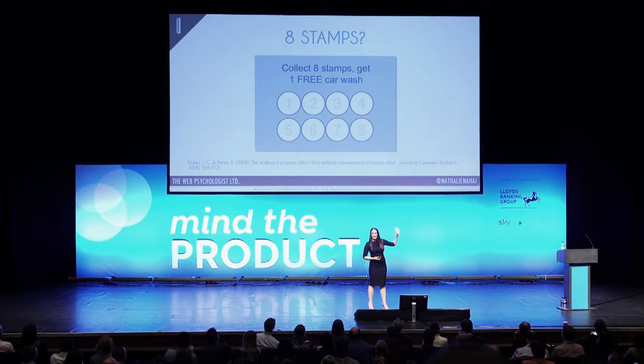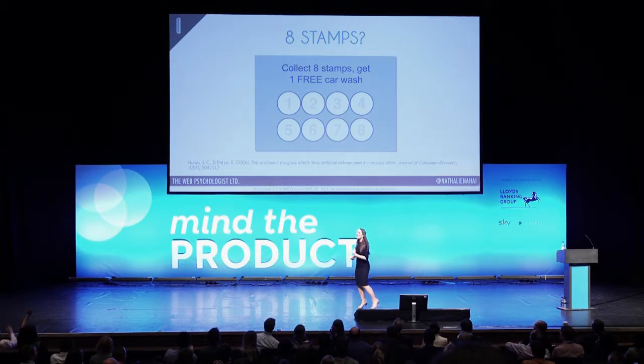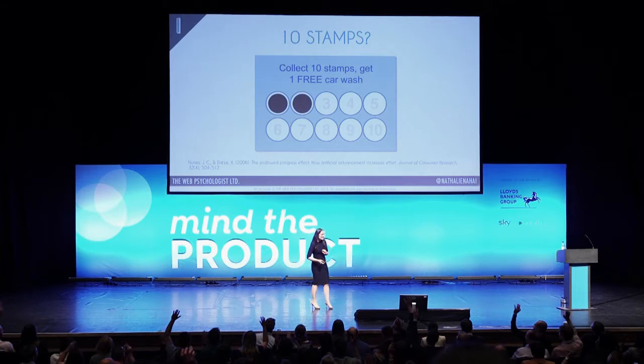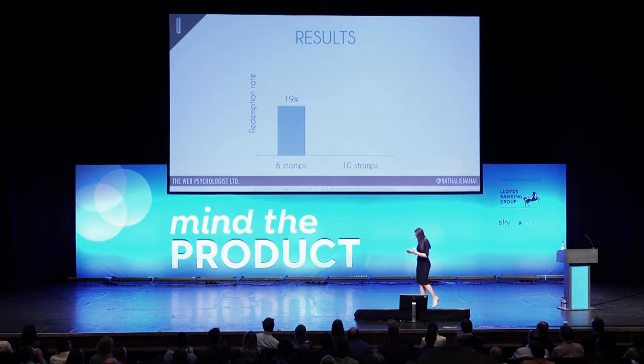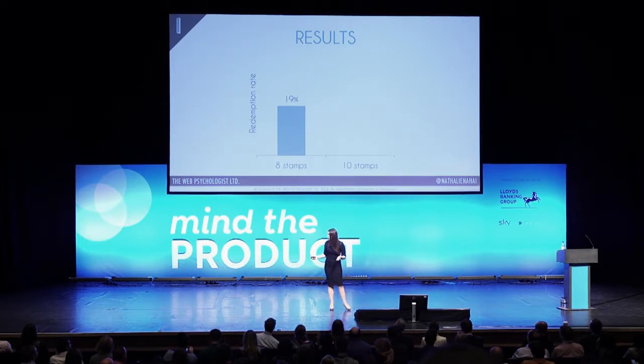My question to you is: which group — group A with eight stamps, or group B with 10 — had the highest redemption rate? The redemption rate for the people in the eight-stamp category was 19%, so 19% of them came back and used the offer, which is quite high.